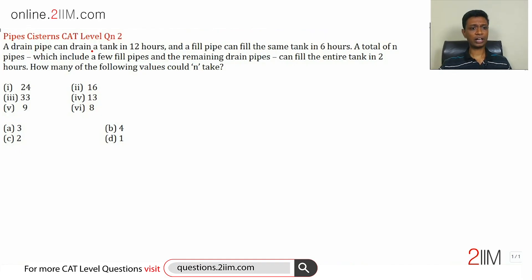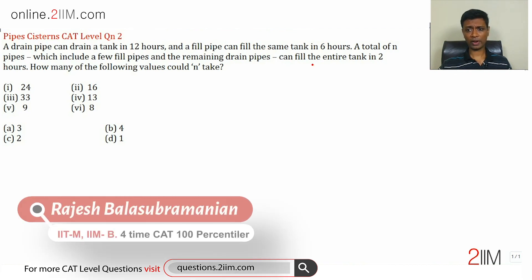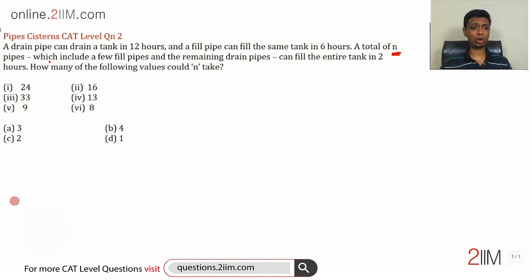A drain pipe can drain a tank in 12 hours, and a fill pipe can fill the same tank in six hours. A total of n pipes, which include a few fill pipes and the remaining drain pipes, can fill the entire tank in two hours. How many of the following values could n take?